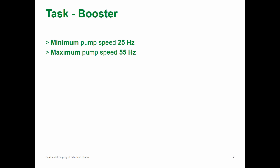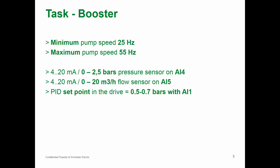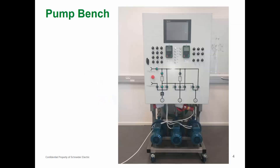For our task, first we need to set up parameters of our pump — minimum and maximum speed: 25 Hz minimum and 55 Hz maximum. After that we set up our sensors: we have a pressure sensor and a flow sensor. We need to set a PID setpoint — everything up to now is set by analog inputs. Then we set up auto/manual with a logical input, and we will use another analog input for speed setpoint in manual mode.